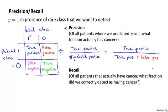High precision would be good — it means that of all the patients we told 'we think you have cancer,' most of them we had actually made accurate predictions on, and they do have cancer.